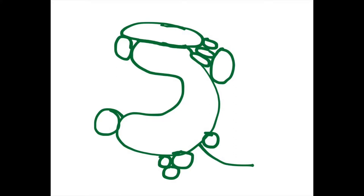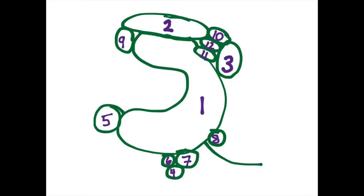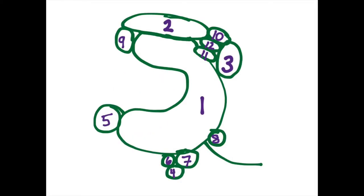RNA polymerase II has 12 subunits, named RPB1–12 in order of size. To learn more about the structure of RNA polymerase II, you can watch our other video. We are going to simplify the drawing of RNA polymerase II here; remember that all 12 subunits are present throughout the processes described.